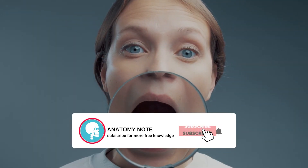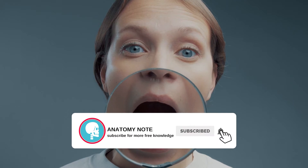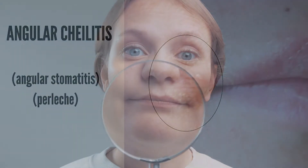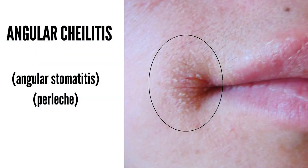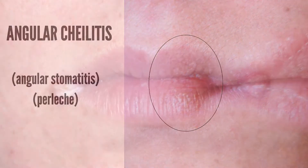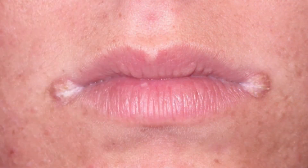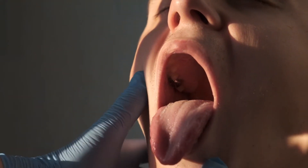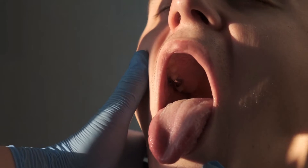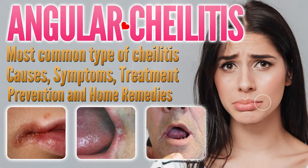Angular cheilitis is a condition that causes red, swollen patches in the corners of your mouth where your lips meet and make an angle. Other names for it are palesh and angular stomatitis. You can get it on one side of your mouth or on both sides at the same time. Depending on underlying causes, it may last a few days or persist indefinitely.